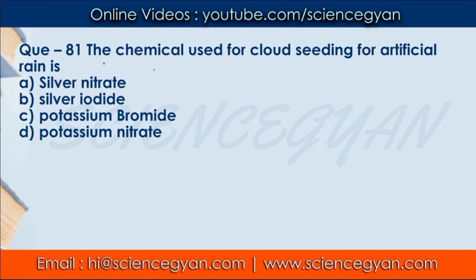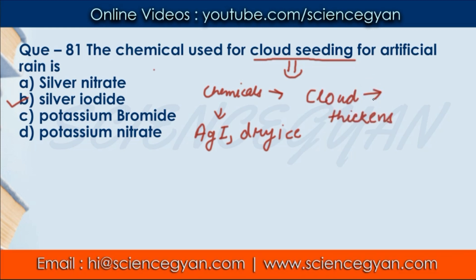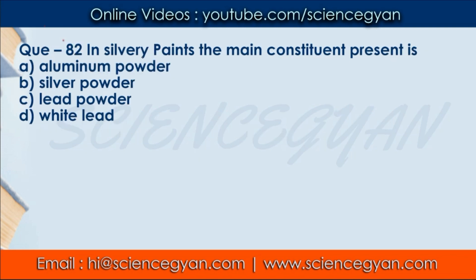Question number 81: The chemical used for cloud seeding for artificial rain — which chemical is used for cloud seeding? The correct answer is silver iodide (AgI). In this process, certain chemicals are released into the upper layer of clouds or injected nearby by flying close. The chemicals used are mainly silver iodide (AgI) or dry ice. This makes the clouds thicker, increasing the chances of artificial rain and snowfall. So B is the correct answer.